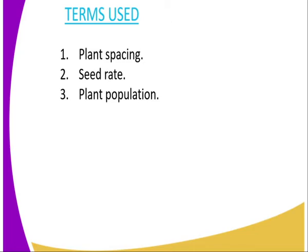Terms used in this topic: the first one is Plant Spacing, which refers to the distance between one plant to the next, and also between one row to the other. The second term is Seed Rate, which refers to the amount of seed used in the farm per hectare. The third one is Plant Population, which refers to the number of plants that are grown in the field.